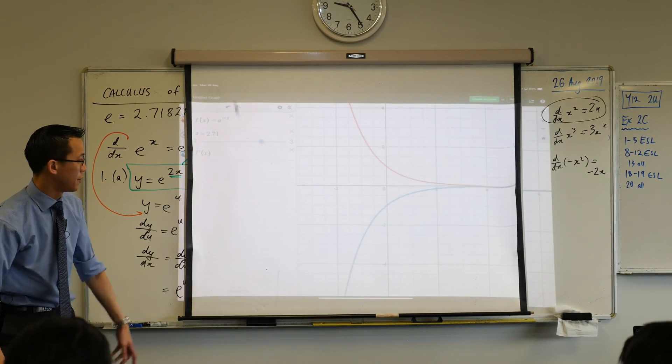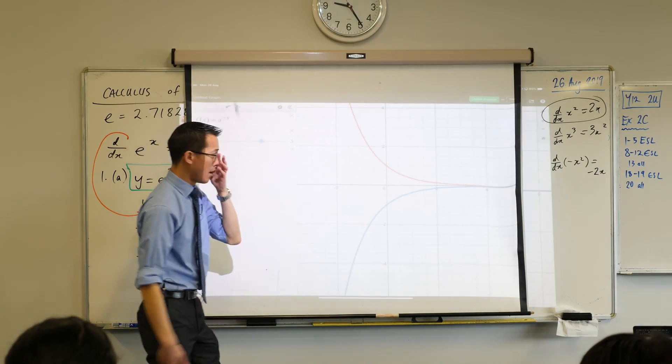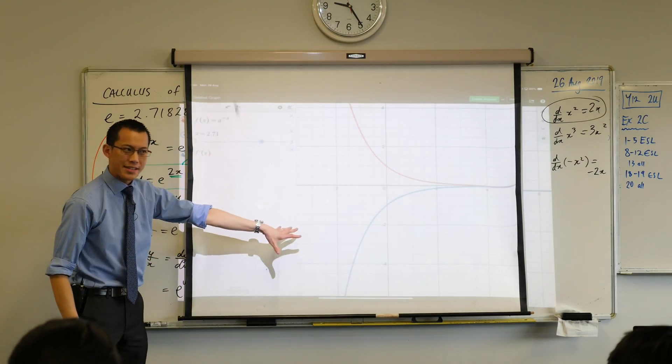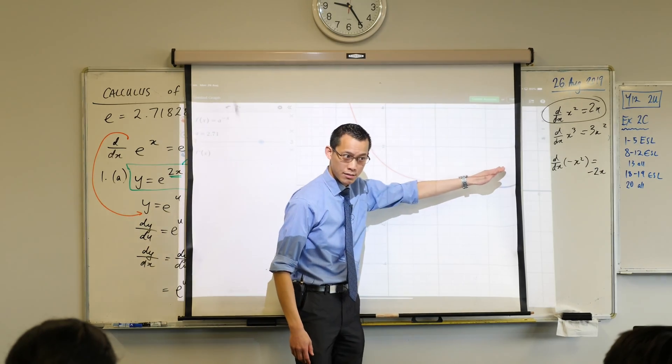There it is. Down the bottom there. See that? You're like oh there's a symmetry there. The derivative is always negative but it gets less and less negative as you go. Does that make sense?